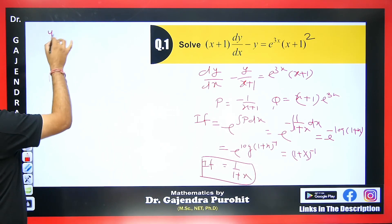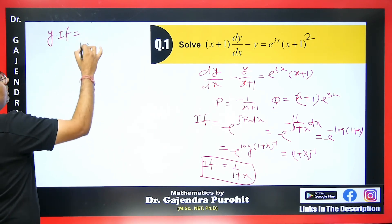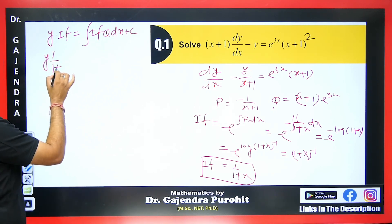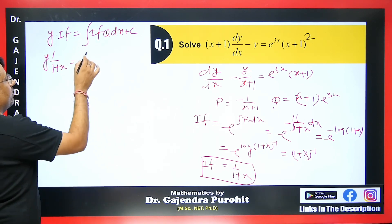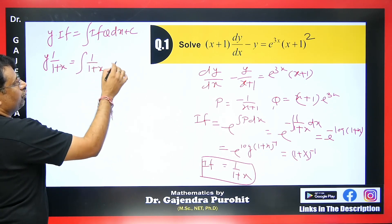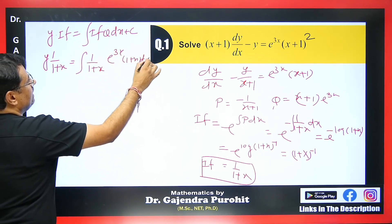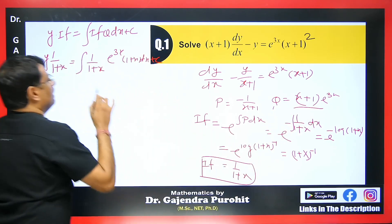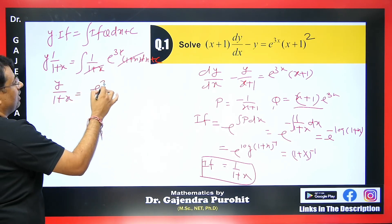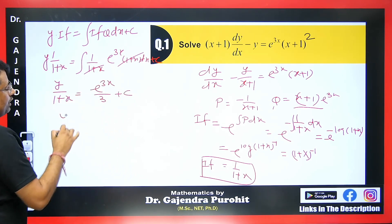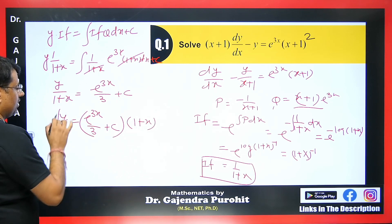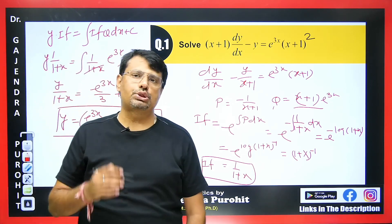We know the answer is y·IF = ∫IF·Q dx + c. This method is very important as it will be used in higher order differential equations too. The integrating factor is 1/(1+x), and Q is (x+1)·e^(3x). Multiplying and cancelling (1+x), we get y/(1+x) = e^(3x)/3 + c. Multiplying through by (1+x) gives the final answer. This is how we solve this type of differential equation.